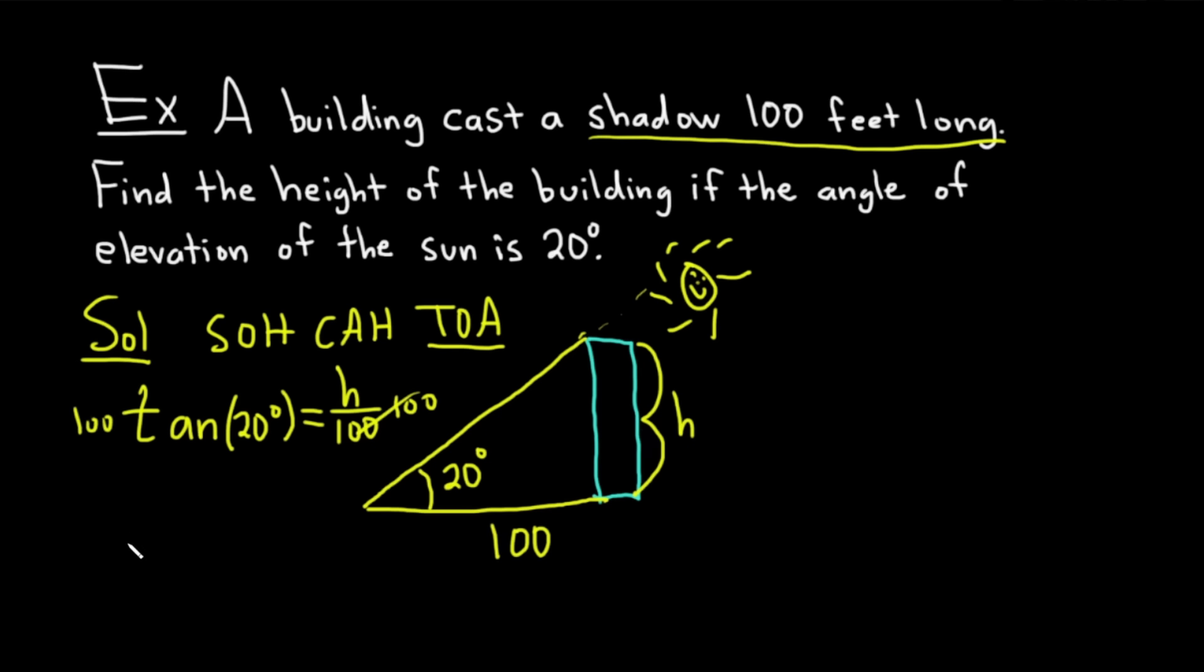These cancel. I'm going to write the H over here on the left. So we have 100 times the tangent of 20 degrees. And it's super important to make sure you're in degree mode when you're using your calculator. If you put this in your calculator and you round to the nearest whole number, this is approximately 36. And then the units are feet.